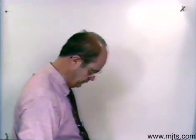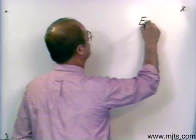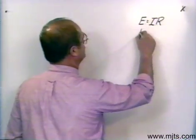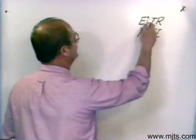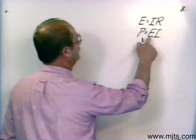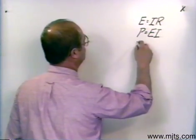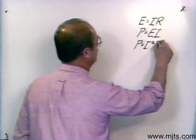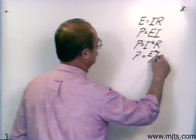We have, up to this time now, four equations. We started out with Ohm's Law: E is equal to I times R. Then we introduced the basic power formula: P is equal to E times I. Combining those two, by taking what we know to be true for voltage and current out of Ohm's Law, we came up with two more power formulas: P is equal to I squared R, and P is equal to E squared over R.